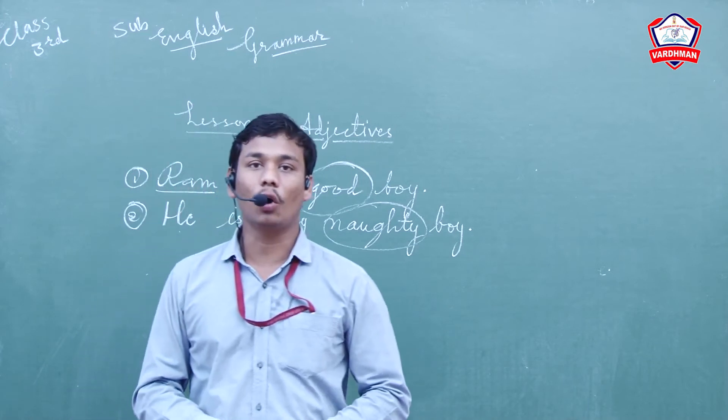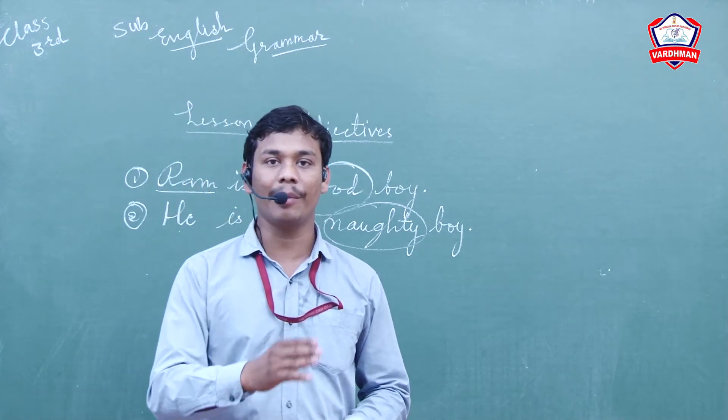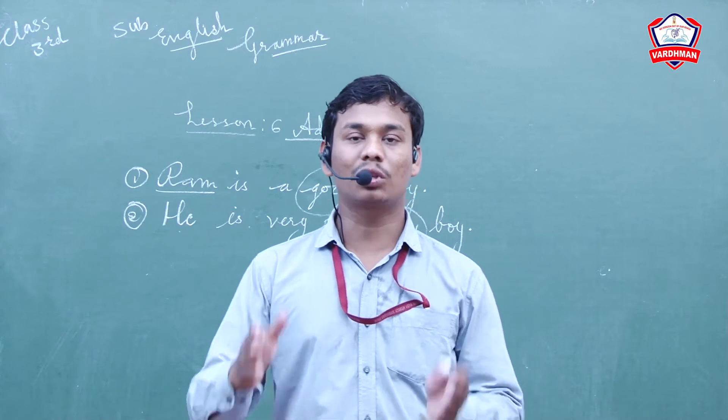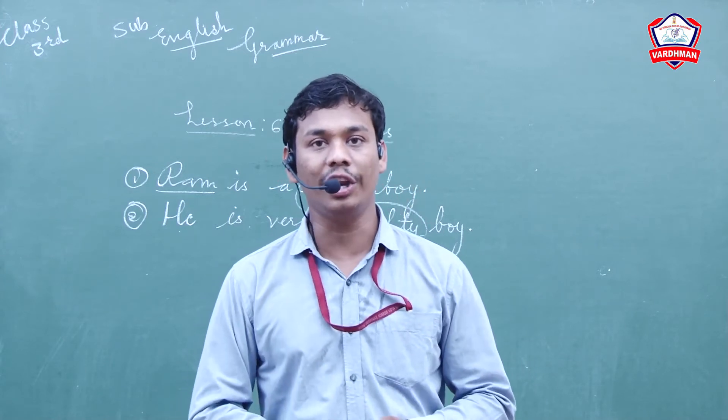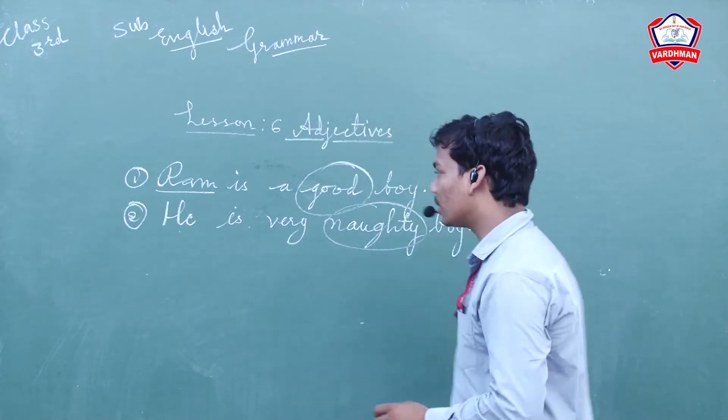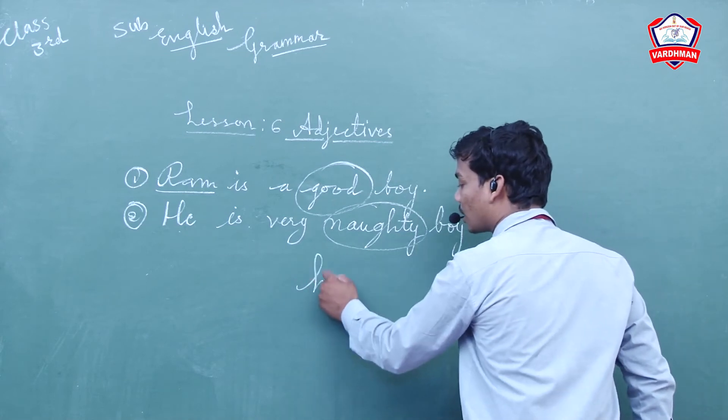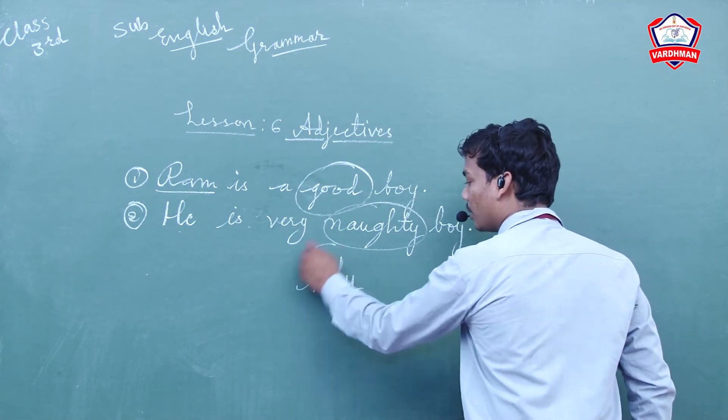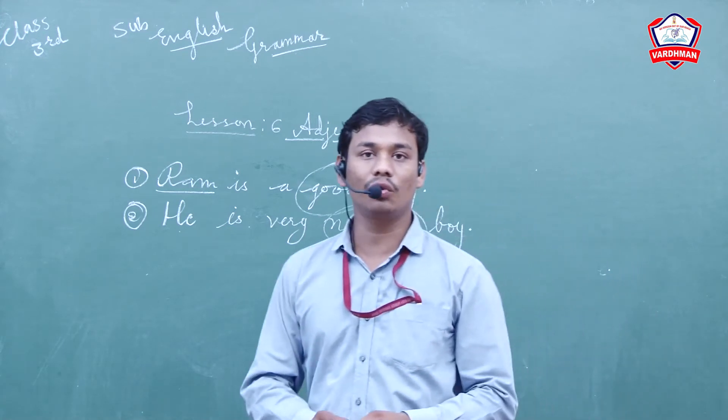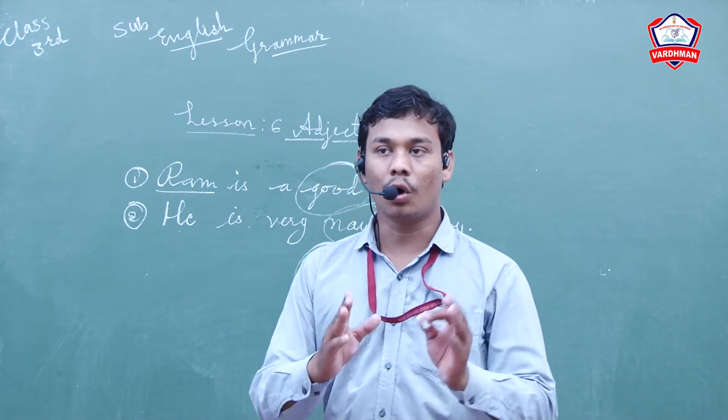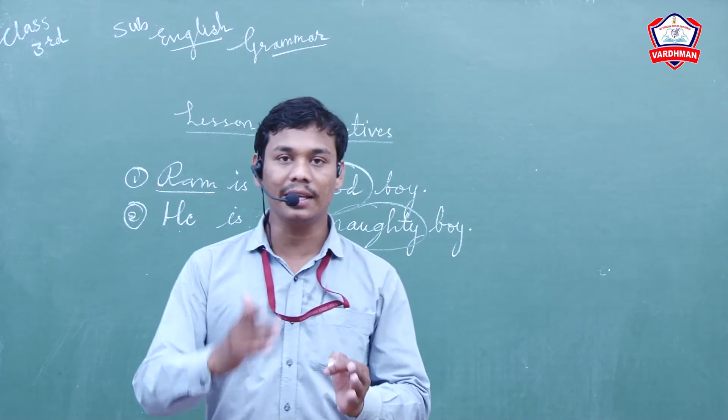Number two: Ganga is a holy river. Ganga is the name of a river. River is also a noun, and holy describes it - it is a religious river, a holy river. So the word holy will be circled. The word holy will be circled.